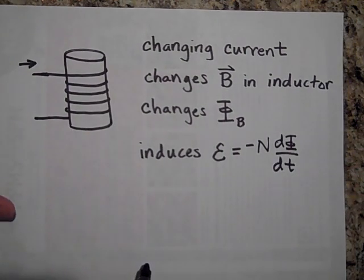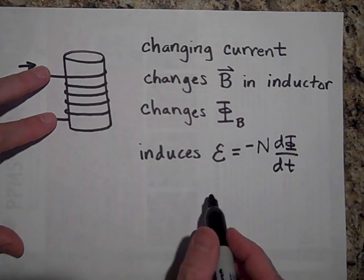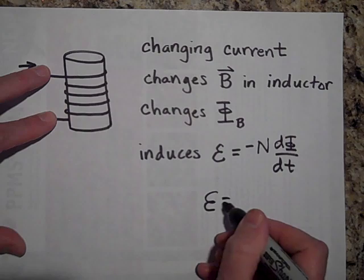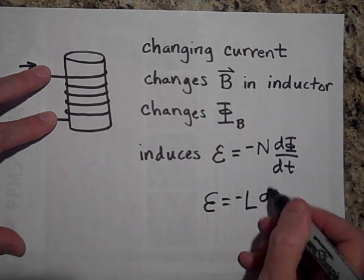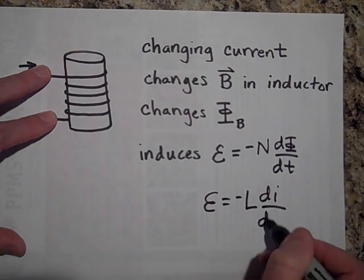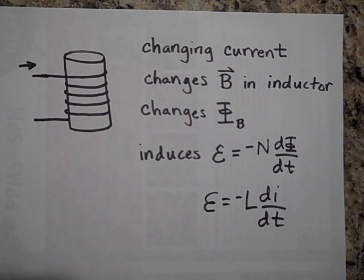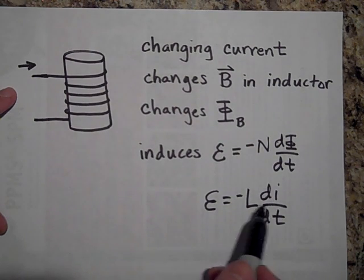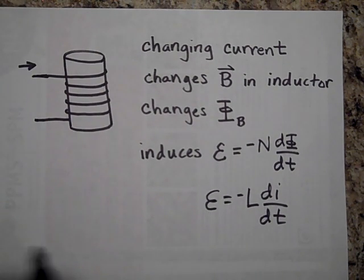In a previous video I showed this is Faraday's law, part of it, and I showed you that this goes to this. So when you have an inductor, L is inductance, and if i is changing with time, then you get this EMF that occurs.